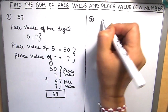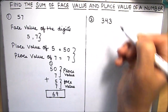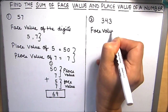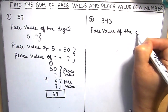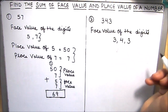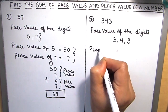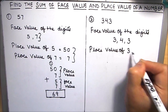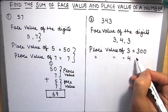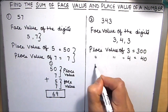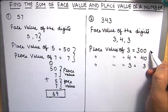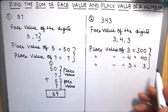Let's take another example — a three digit number: 343. Now we will write the face value of the digits: the face value of the digits is 3, 4, and 3. The place value of 3 in the hundreds place is 300, place value of 4 in the tens place is 40, and place value of 3 in the units place is 3. These are the place values and these are the face values of all the digits in the number.